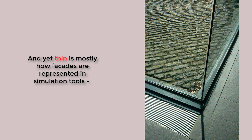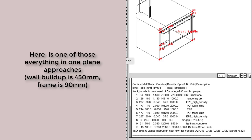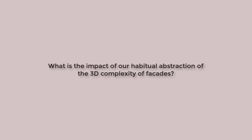Yet we habitually abstract facades which are not thin into a collection of two-dimensional entities aligned onto single planes. Here's a recent model that has separated the framing elements and the glazing in the facade. In elevation it looks all right; in section, not so much. Is it good enough, especially where minor faults in facades can make or break something like a passive house certification?